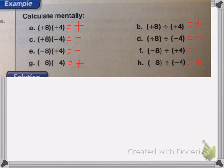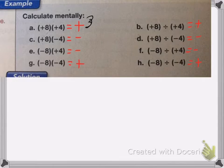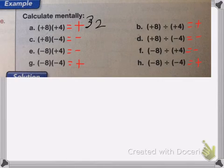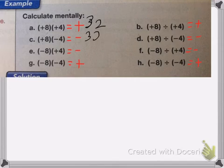Let's go ahead and solve. 8 times 4 is 32. Now, positive 8 times a negative 4 is going to be negative 32.